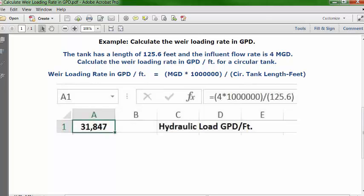31,847 gallons per day per foot, based on this flow rate and tank dimensions. So that's your answer: 31,847.